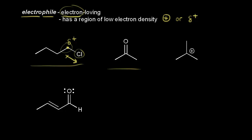Next let's look at acetone. Oxygen is more electronegative than carbon, so oxygen is going to withdraw some electron density away from this carbon, and this carbon would be partially positive. So this carbon is the electrophilic portion of this compound.